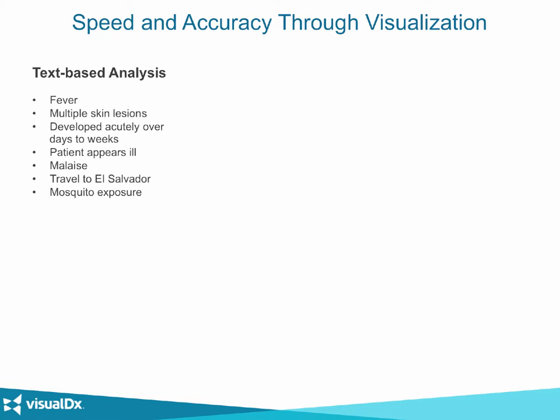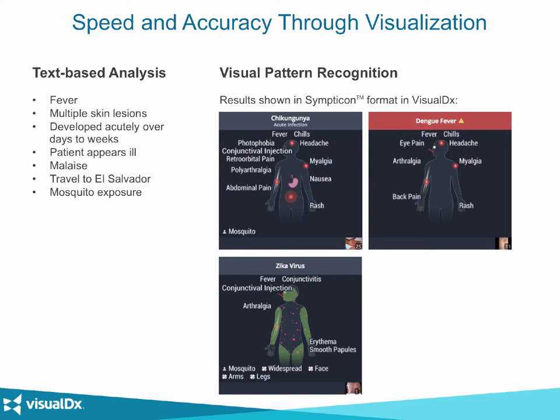The patient has a fever, multiple skin lesions that developed acutely over days to weeks, they appear ill, have malaise, traveled to El Salvador, and were bitten by a mosquito. We're still thinking through all those findings trying to figure out the differential, but VisualDx will quickly depict that using the Symptocon. You can see all the mosquito-borne illnesses we hear about in the news — chikungunya, dengue, and Zika virus. That description on the left fits them all.